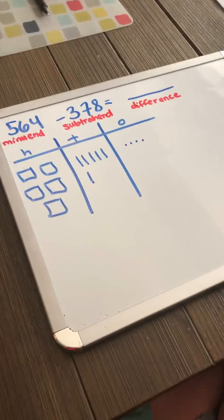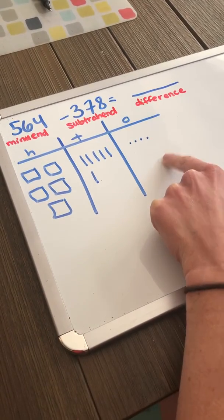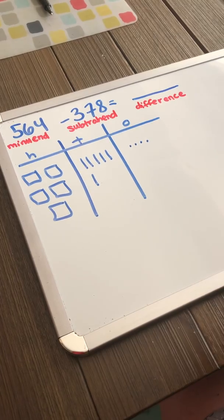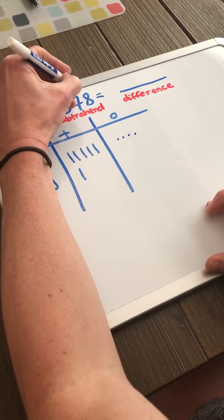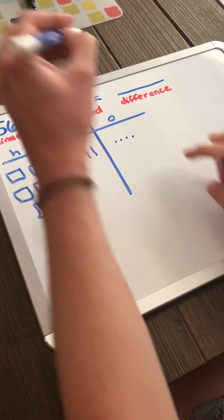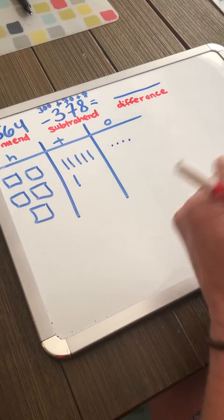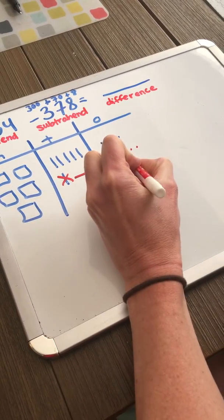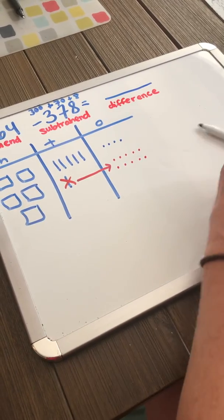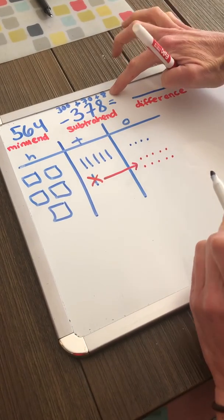Let's do this with drawings. We've got our minuend, our subtrahend, and our difference. I have represented my minuend, which is 564. I need to take away 378. Starting with my ones, I cannot take away 8 ones from 4 ones. So I am going to have to get rid of this 10 and exchange it for 10 ones. Now I don't have 4 ones — I have 4 plus 10, which is 14 ones. And I can take away 8.